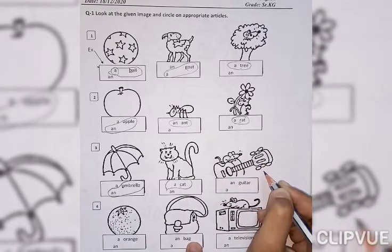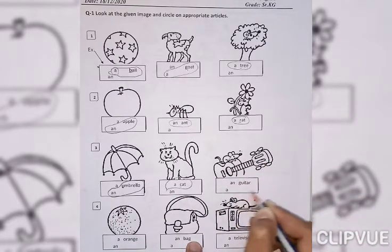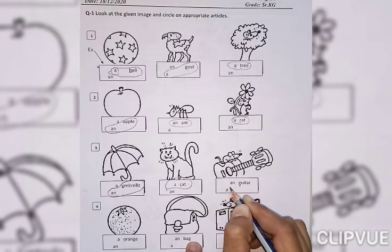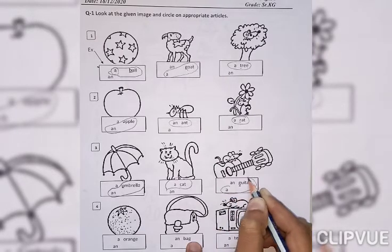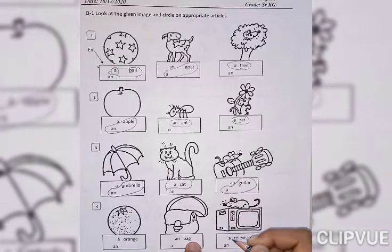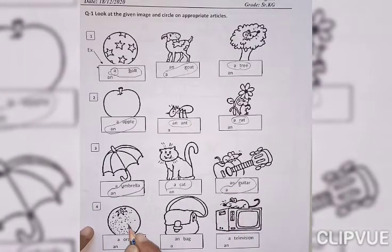What is this? Guitar. G is consonant. That's why which article will come? A article will come. What is this? Orange. An orange.